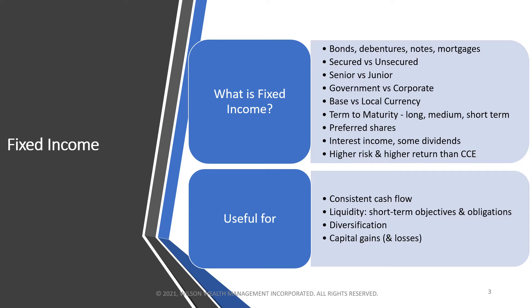People can invest in fixed income through government bonds versus corporate bonds. On average, government bonds tend to be more secure because they're backed by the government rather than an individual company — though as we saw with countries like Venezuela, it's not always true that government is a better bet than certain large companies. Debt can also be defined by base currency — usually your home currency, like the U.S. dollar or Canadian dollar — versus the local currency of the debt issue. So a Canadian company could issue debt in U.S. dollars: the base currency is Canadian, the issue currency is U.S. dollars.